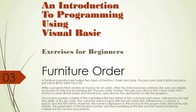The invoice number consists of the capitalized first two letters of the customer's last name followed by the last four digits of the zip code. The customer name is input with the last name first, followed by a comma and a space and the first name. However, the name is displayed on the invoice in the proper order — first name and last name. The generation of the invoice number and the reordering of the first and last names should be carried out by function procedures.